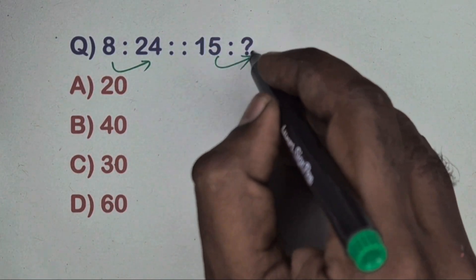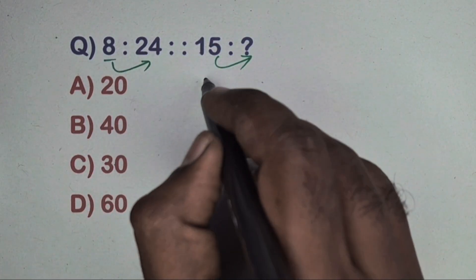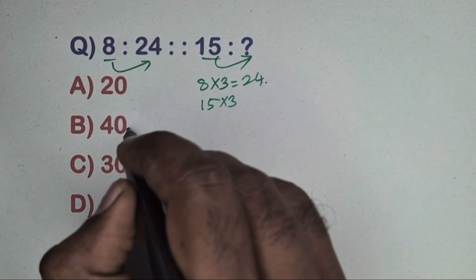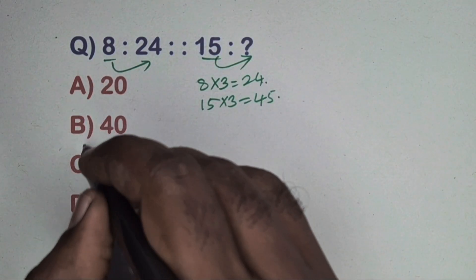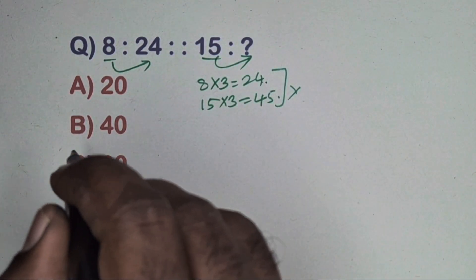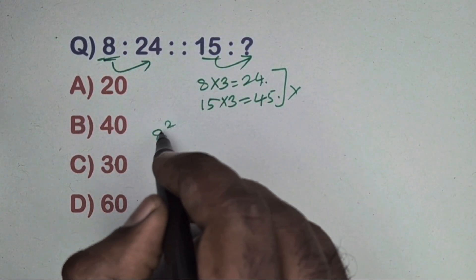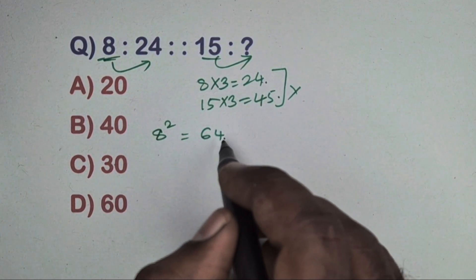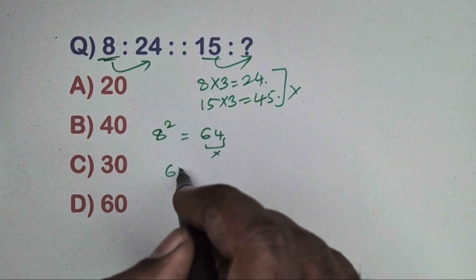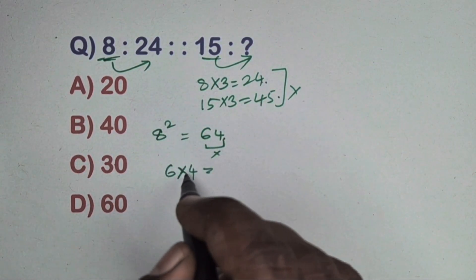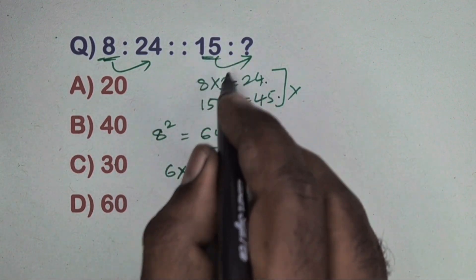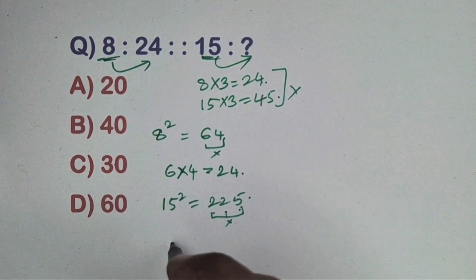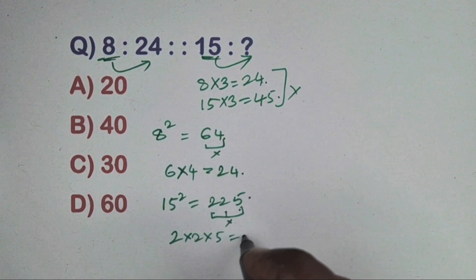Next question: 8 is related to 24 and 15 is related to which number? Note that 8 into 3 is 24, but applying the same to 15 gives 45, which is not in the options. The correct method combines squaring and digit multiplication: 8 squared is 64, multiply digits 6 into 4 equals 24. Same way, 15 squared equals 225, multiply digits 2 into 2 into 5 equals 20. Option J is the correct answer.